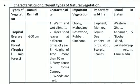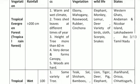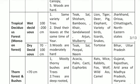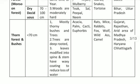In the last video, we discussed two types of vegetation. First is Tropical Evergreen Forest, also named Tropical Rain Forest. Second is Tropical Deciduous Forest, also referred to as Monsoon Forest. Third is Thorn Forest and Brush Forest.